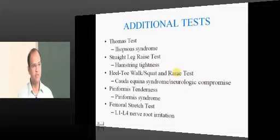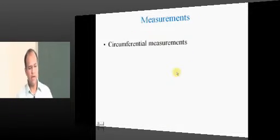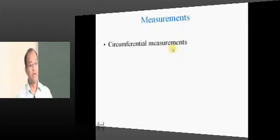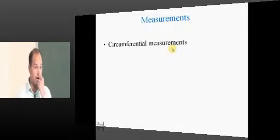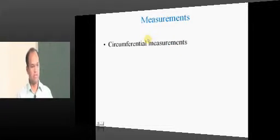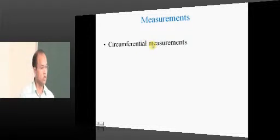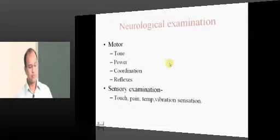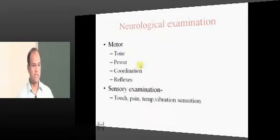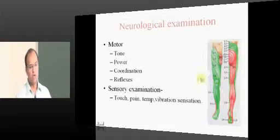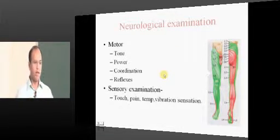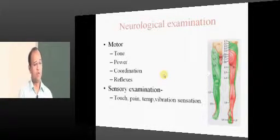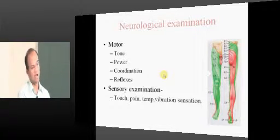Many additional tests have been described. After those tests, measure the circumferential diameter of the limbs — if pathology has been present for a long time, there will be muscle wasting. This wasting occurs in lower motor neuron lesions with gross impingement on the nerve roots. Then perform neurological examination: motor and sensory. Motor examination covers power, tone, and reflexes; sensory examination covers touch, pain, and temperature. Autonomic nervous system is the third component.